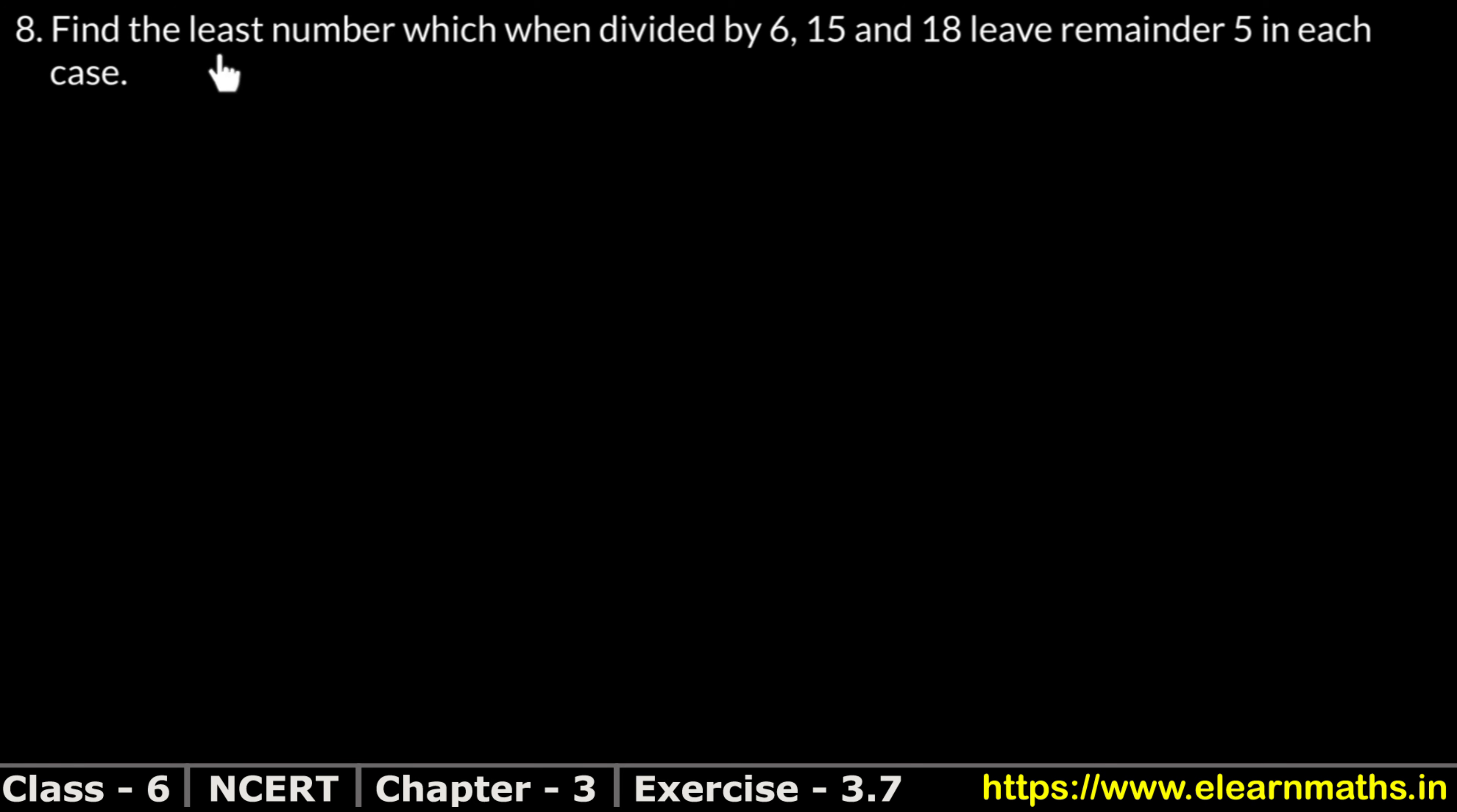See, least number means LCM. We find the LCM and divide it from each number. When there's a remainder, what do we do? We find LCM, and which number comes, we add the remainder. LCM is straight, so we find LCM of 6, 15, and 18.